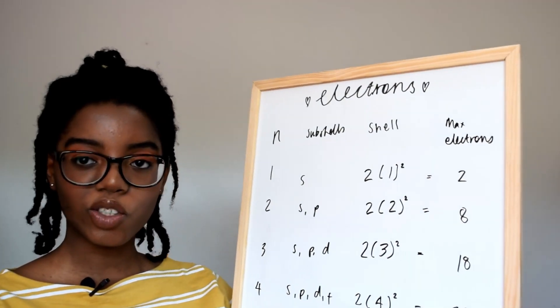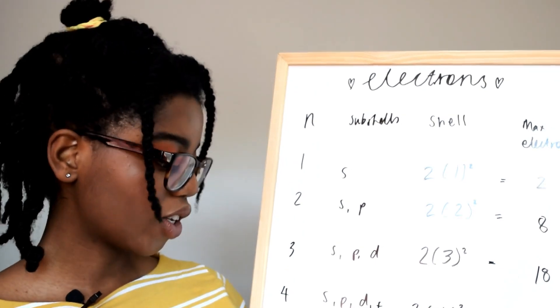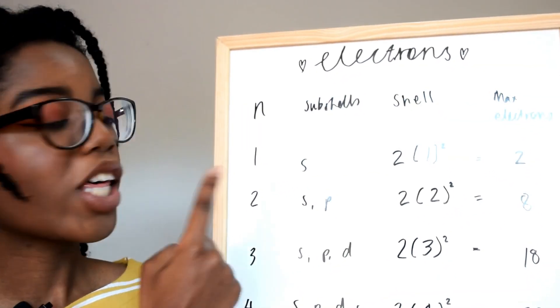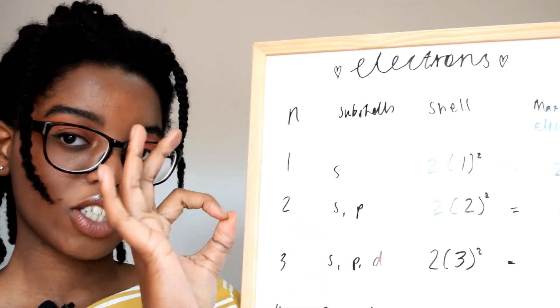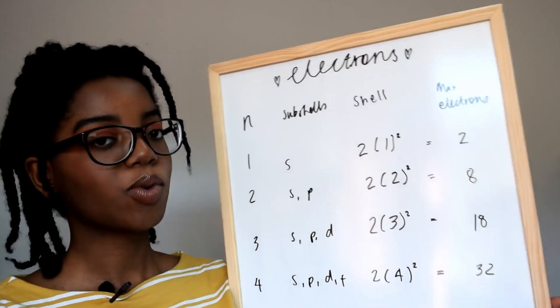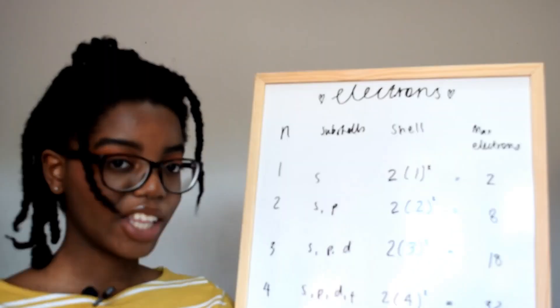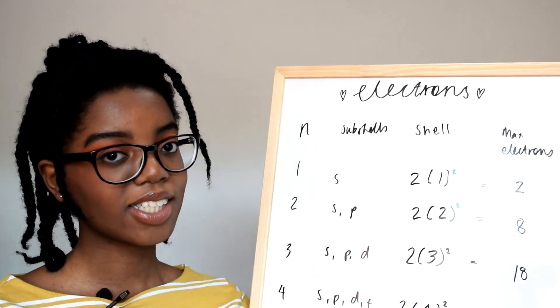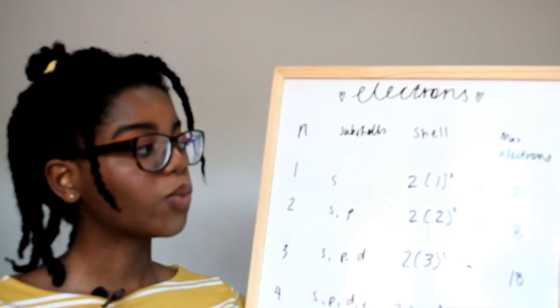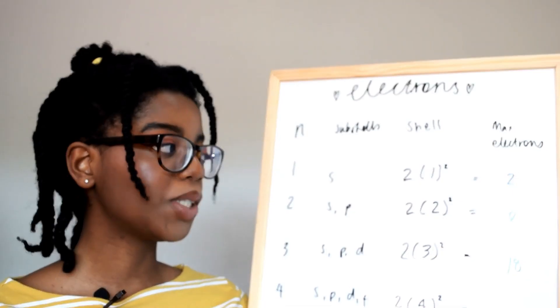From GCSE's 2-8-8-2, now we've got A-level with electron shells, this n being the electron shell number, also known as the principal quantum number. So with one electron shell you would just have s subshell. With one principal quantum number you would have only the s subshell which would have a maximum of two electrons from doing 2 times 1 squared.